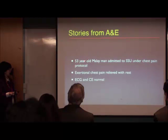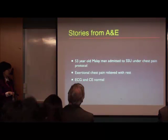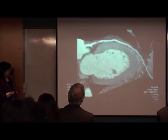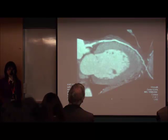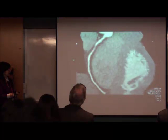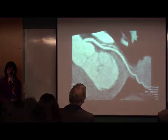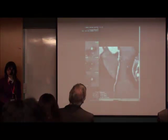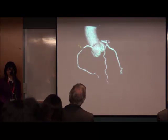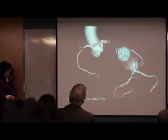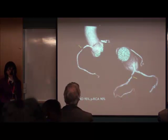Here's a 53-year-old Malay man admitted to SSU under the chest pain protocol with exertional chest pain. His ECG and cardiac enzymes were normal. He was actually a taxi driver. We did the coronary CT and he actually had quite severe stenosis in the proximal LAD — this is a curved planar reformation of the LAD — and also quite severe stenosis in the right coronary artery. We thought he had two-vessel disease with a normal circumflex. Measurement confirmed significant stenosis, and cath showed 95% stenosis in the LAD and 90% stenosis in the RCA. This patient was caught early — we did not want him driving taxis like that.